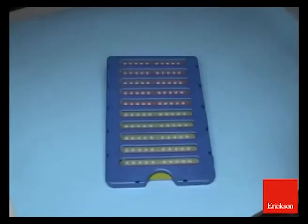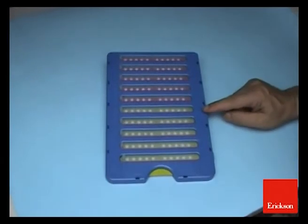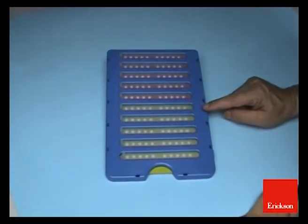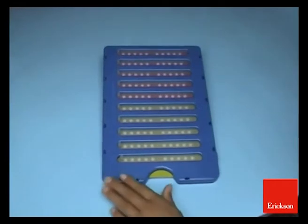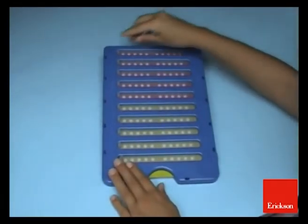The analogical method, the line of 100. This is the book for the second class and this is the tool called line of 100. Let's see how it works. Now count 1 by 1.